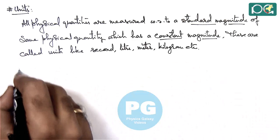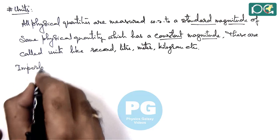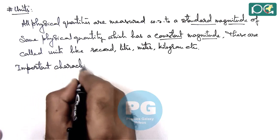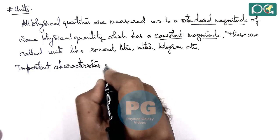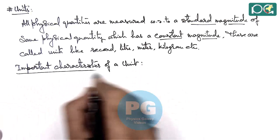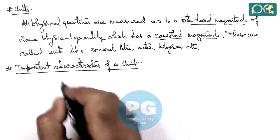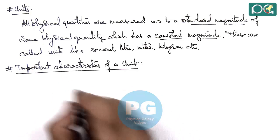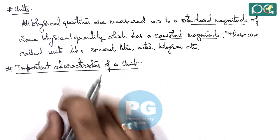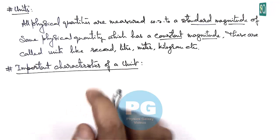If we talk about some important characteristics that are very useful to understand — there are 4 important characteristics of a unit. These must be linked with all the units. If the unit is following these 4 characteristics then only it can be used as a universal unit for that physical quantity.